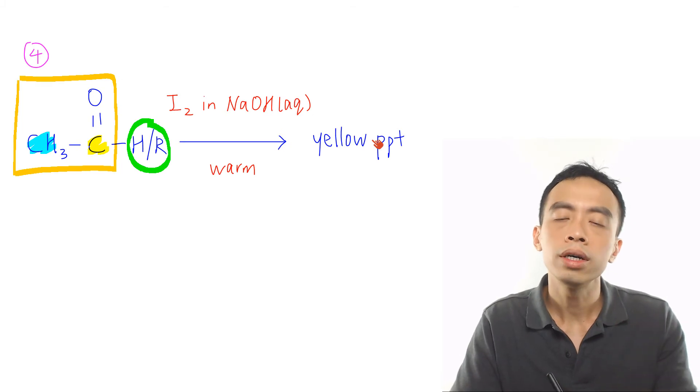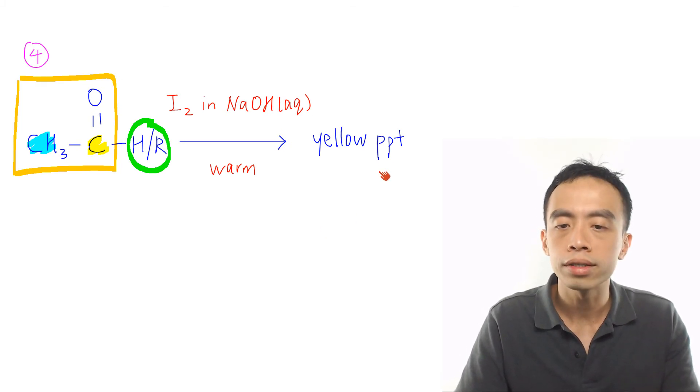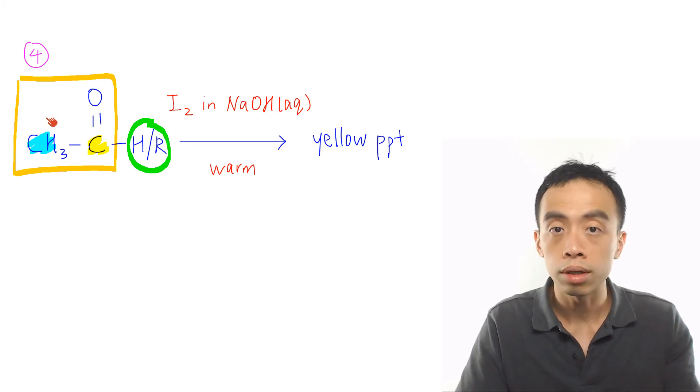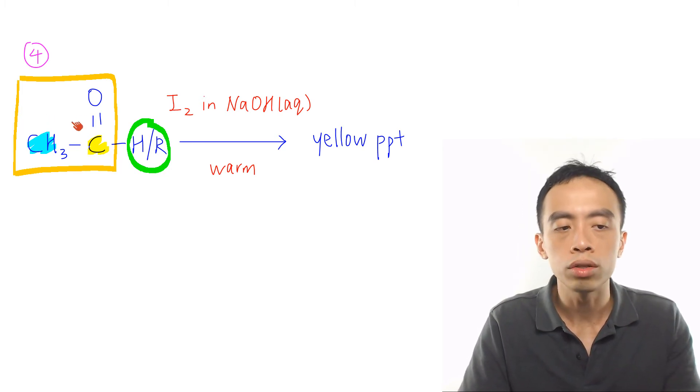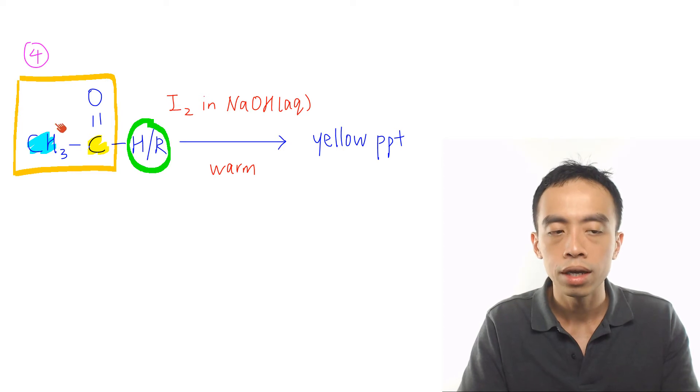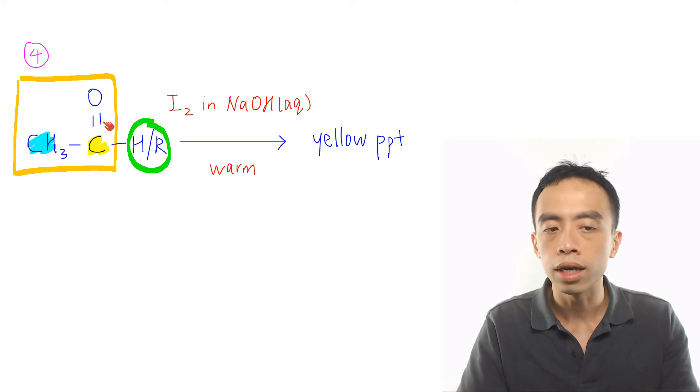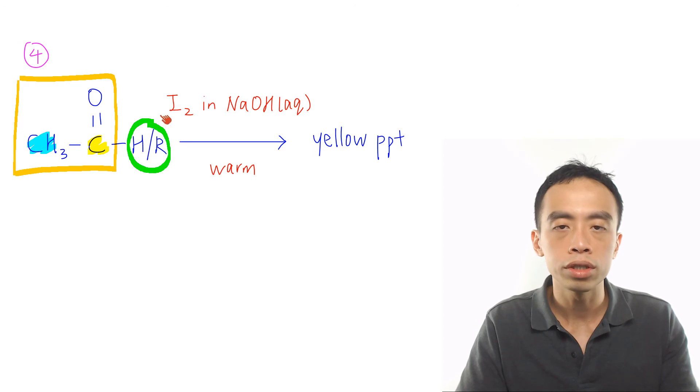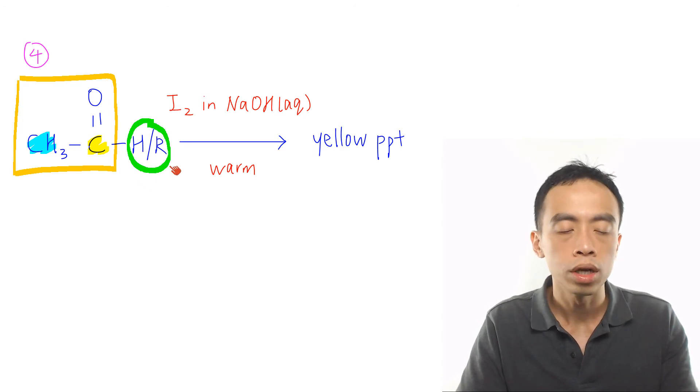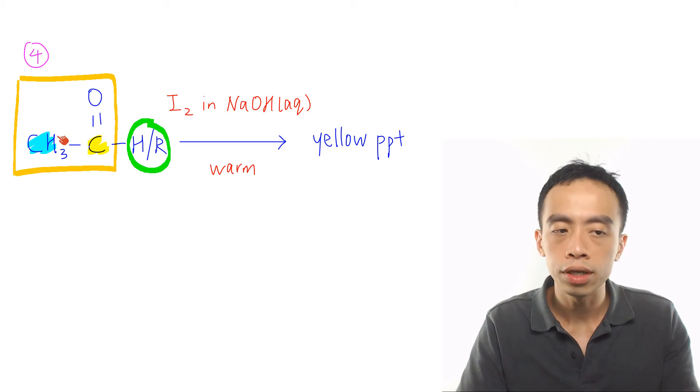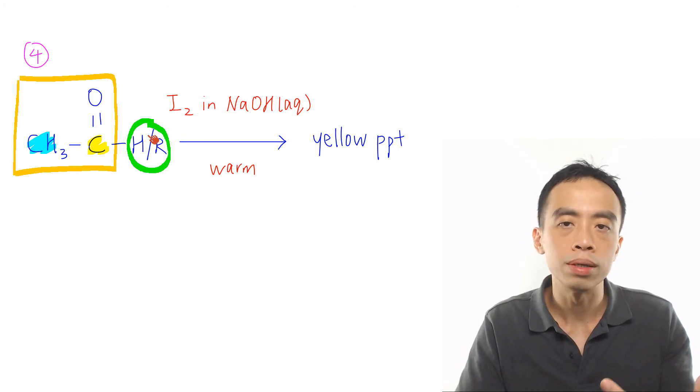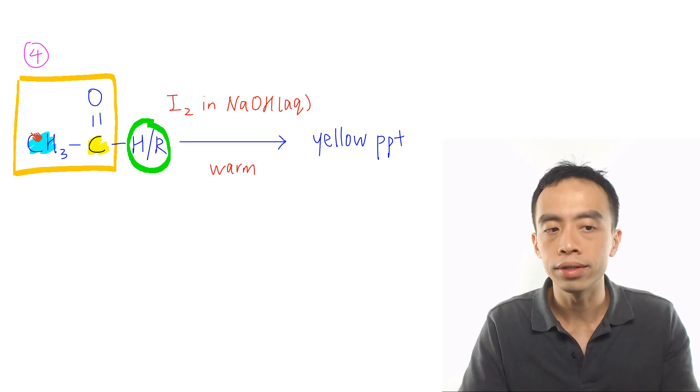Must-know reaction number 4 is our triiodomethane test to give us a yellow precipitate. Now this applies to carbonyl compounds which contain a specific structure. We need to have a methyl carbon attached to a C=O group, then it is also attached to either a hydrogen or an R group. So what this will mean is it will either be a ketone with a CH3 group on one side and R group on the other side, or it will be my ethanol where this is a CH3 and this is my hydrogen.